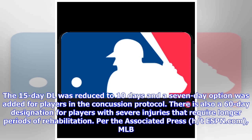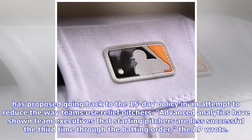The 15-day DL was reduced to 10 days and a 7-day option was added for players in the concussion protocol. There is also a 60-day designation for players with severe injuries that require longer periods of rehabilitation, per the Associated Press. MLB has proposed going back to the 15-day policy in an attempt to reduce the way teams use relief pitchers.